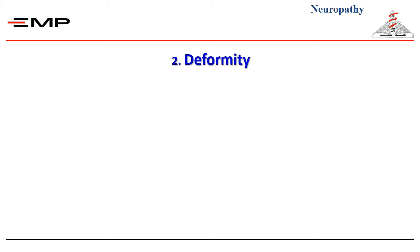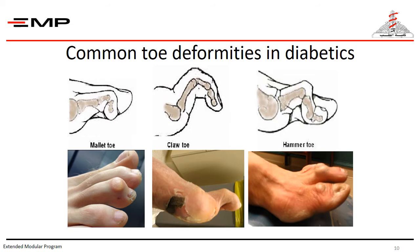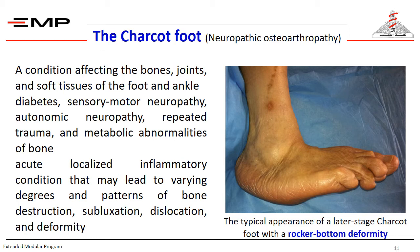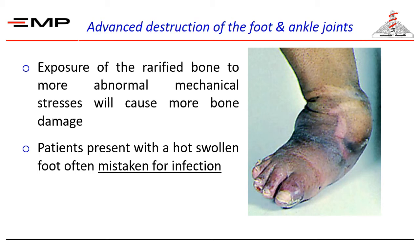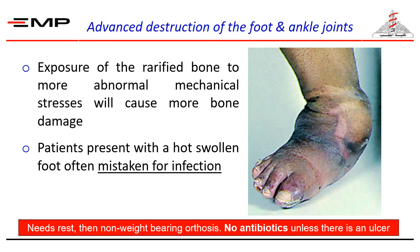Neuropathic affections of the intrinsic foot muscles lead to different deformities. If weight bearing is continued, exposure of the rarefied bone to more abnormal mechanical stresses will cause more bone damage. Patients with acute Charcot neuropathic osteoarthropathy present with a hot, swollen foot, and this is commonly mistaken for infection. An acute Charcot foot needs rest with the use of non-weight-bearing orthosis, and unless there is an ulcer or evident recent penetrating trauma, no antibiotic is required.